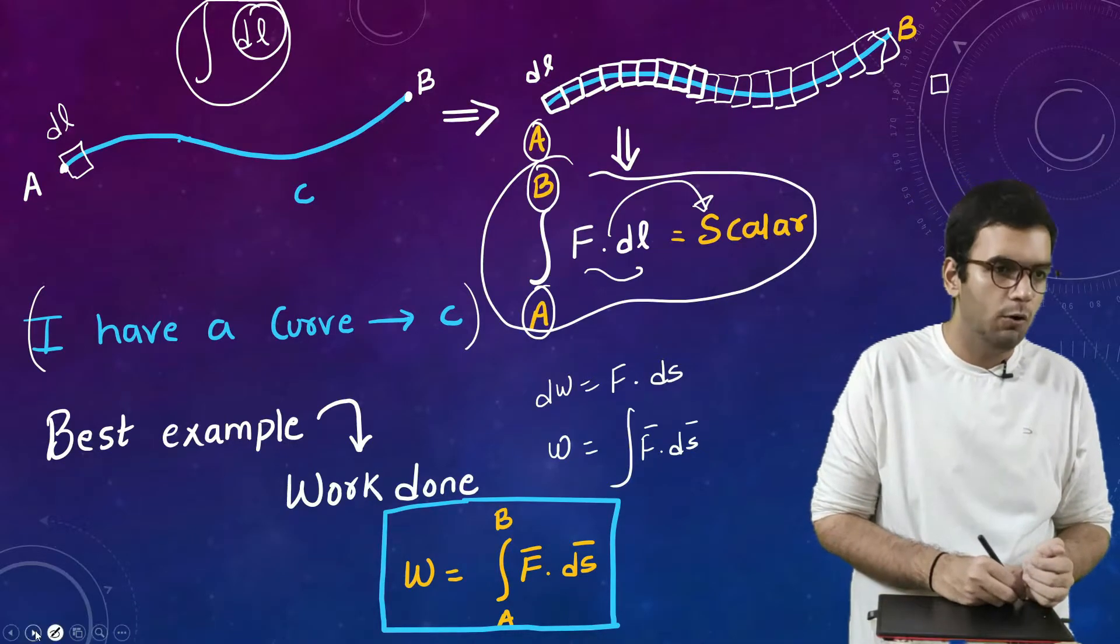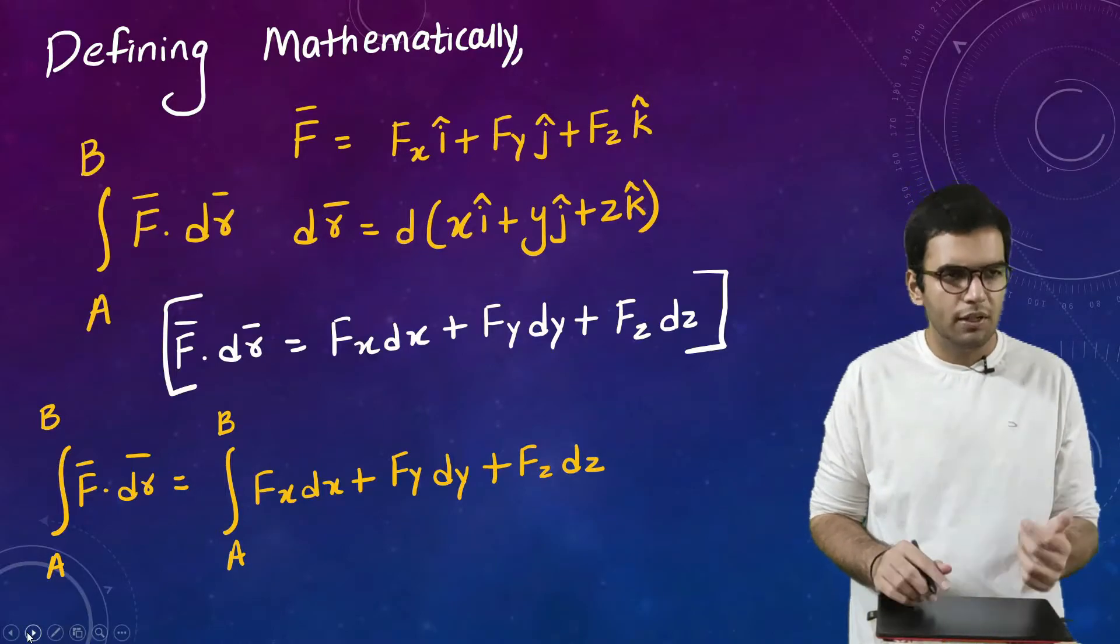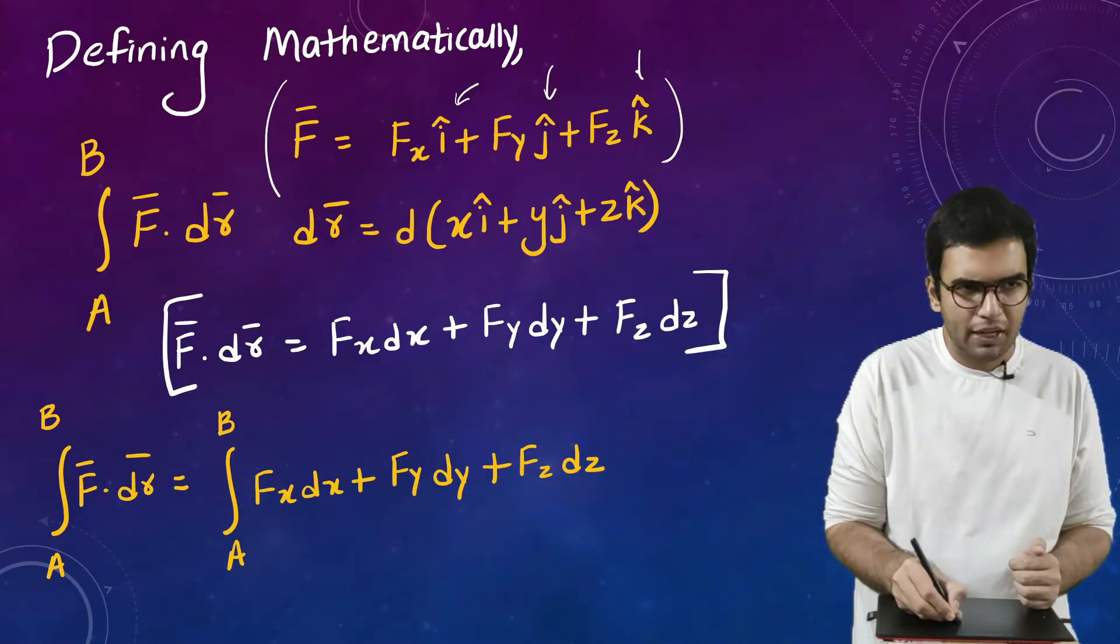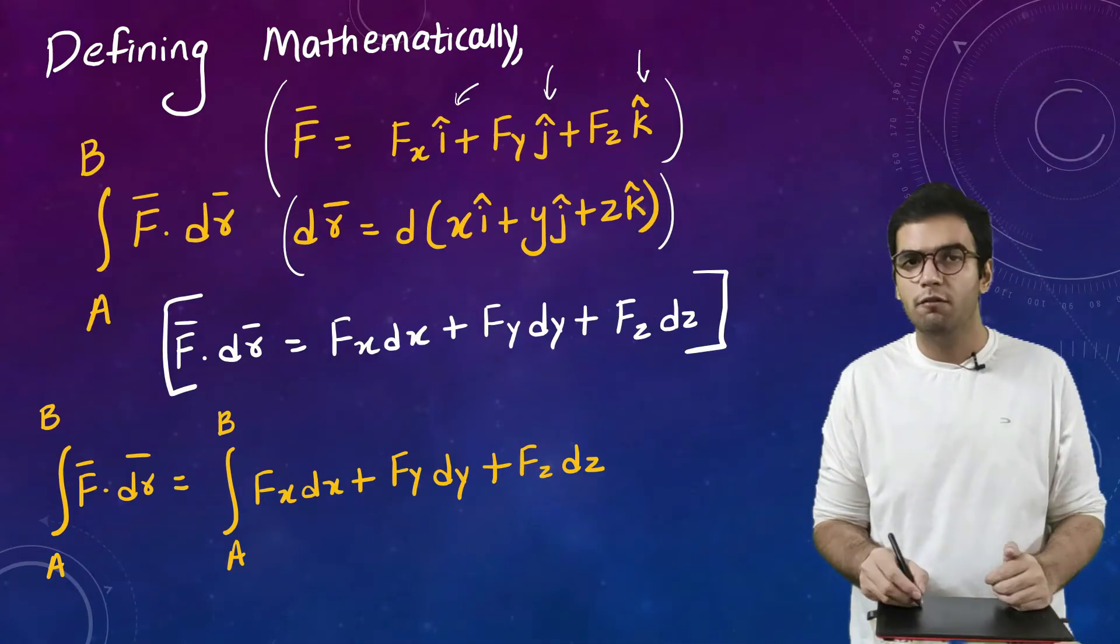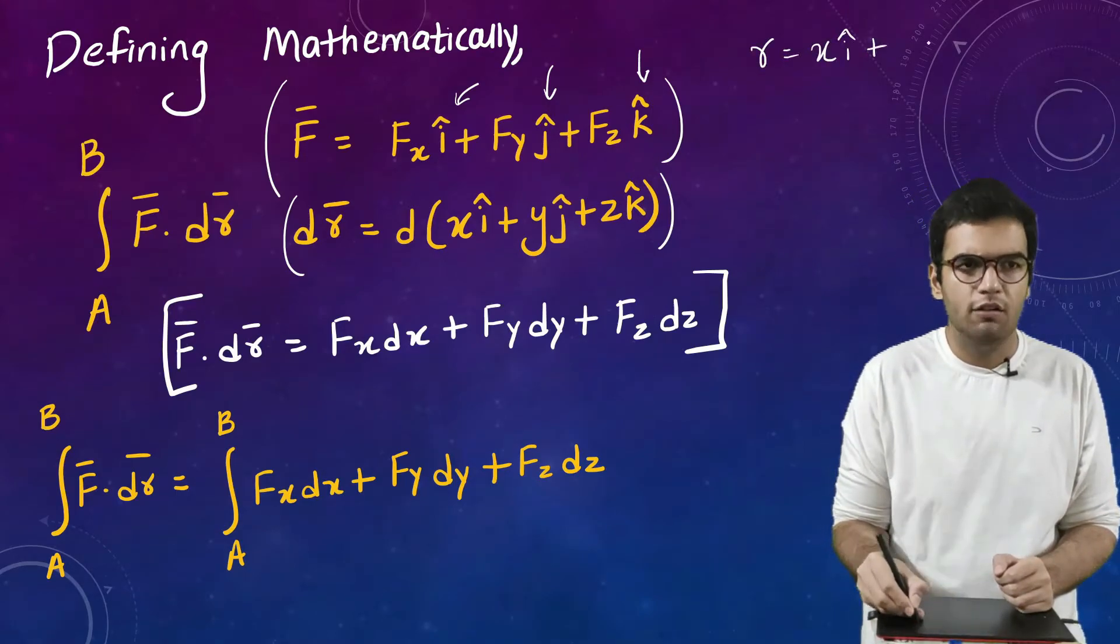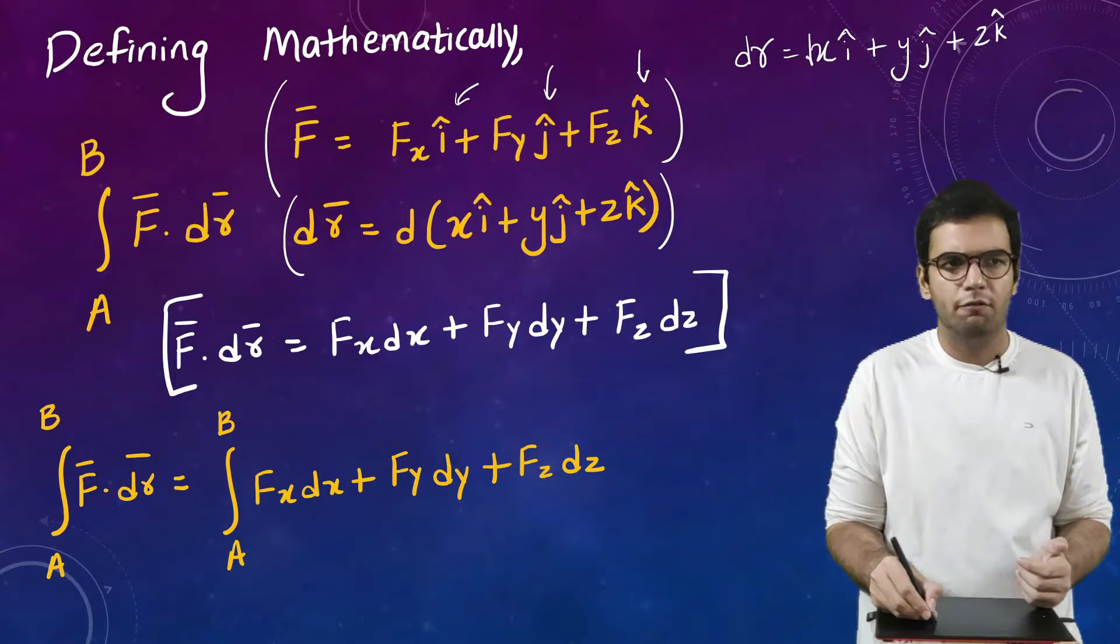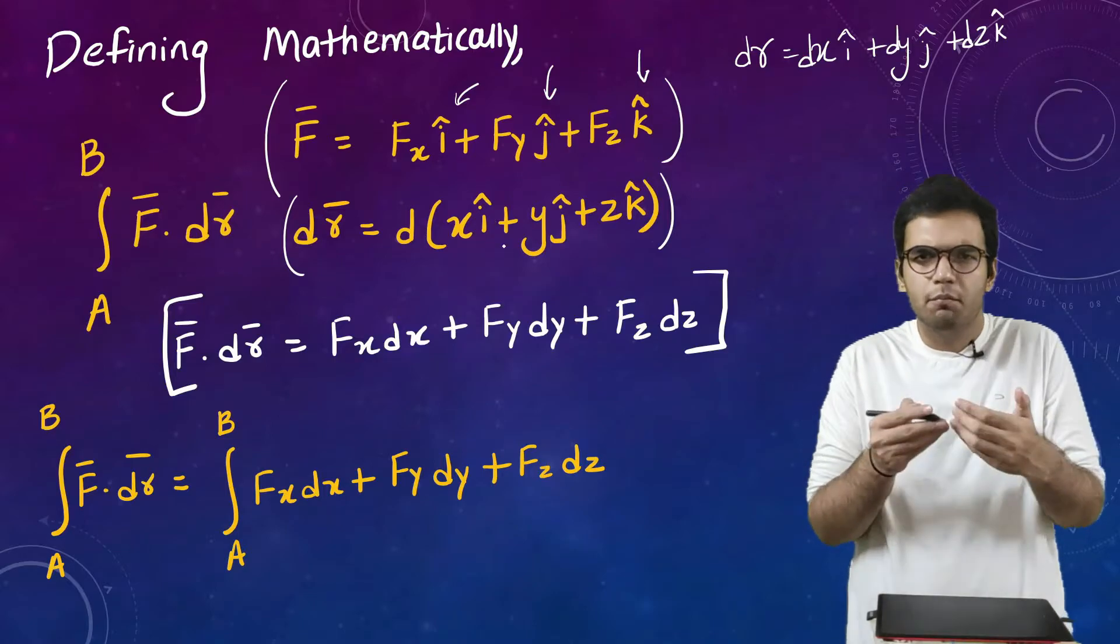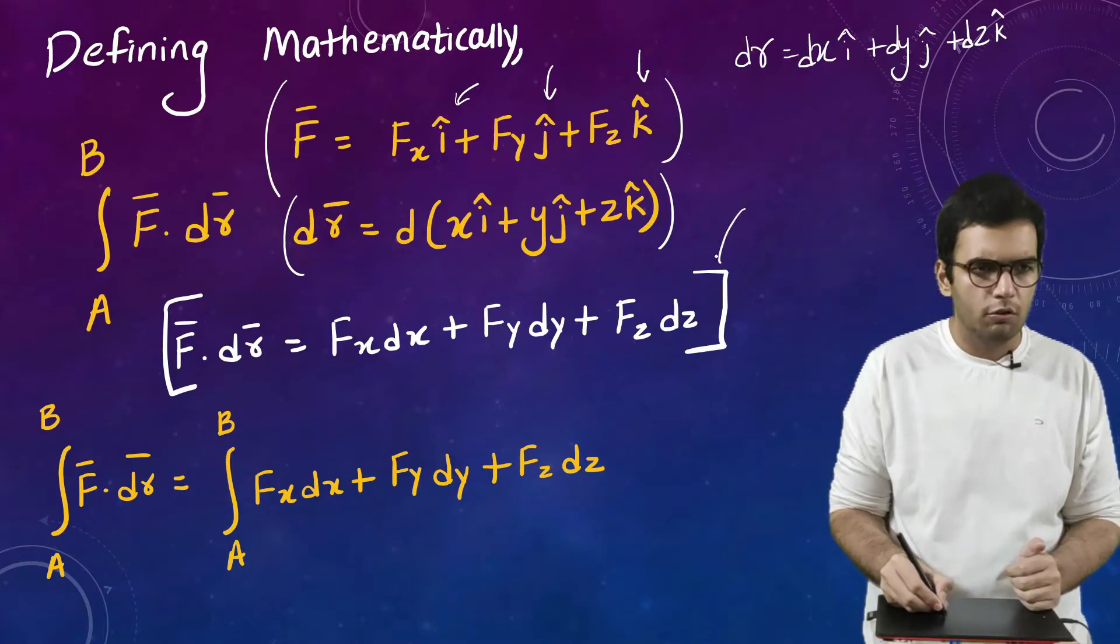Now let us define the terms mathematically. Okay, so mathematically F is a vector valued function, basically it contains i cap, j cap, k cap. Again dr or dl or ds, whatever symbol you write, it is also a vector valued function because it is essentially a position vector. By position vector it already contains direction so yes it is also a vector valued function. If I multiply d by this side so definitely everything will get multiplied by d. And yes in dot product i cap dot i cap becomes 1, j cap dot j cap becomes 1, k cap dot k cap becomes 1. So this is what I will get.